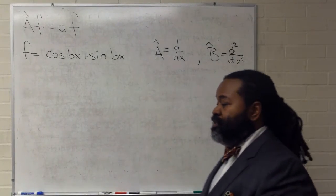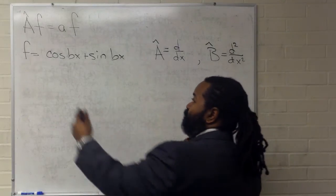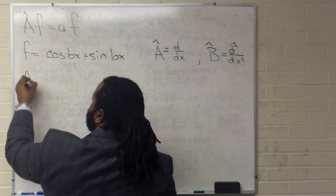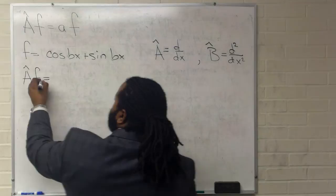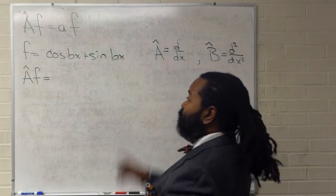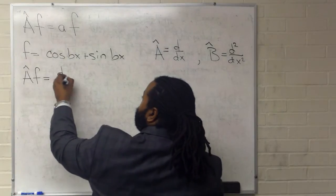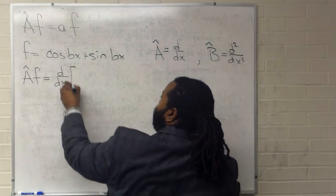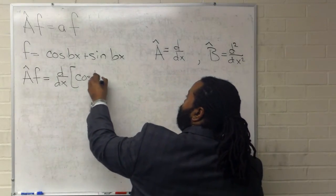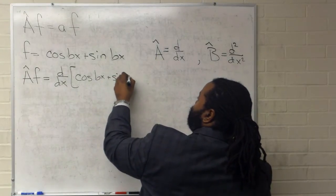In this case, the first step is to set up the quantity operator acting on the function. It's going to be the first derivative of this entire thing, d/dx acting on cosine bx plus sine bx.